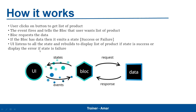Let me give you an example of how BLoC works. Suppose there is a UI with a button, and whenever the user clicks on that button, the user wants a list of products. Whenever the user clicks the button, an event is generated, and this event tells the BLoC — which is in the middle — that the user wants a list of products.